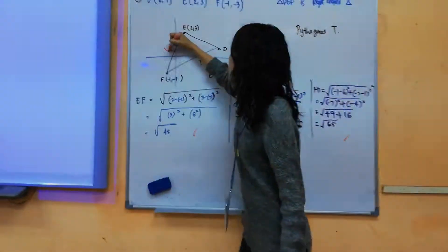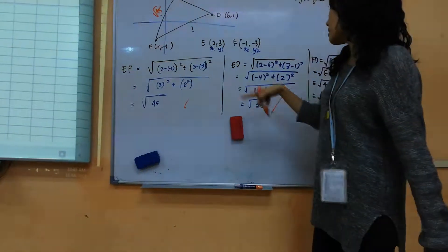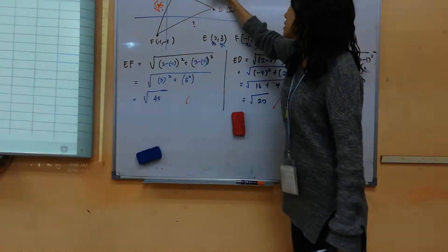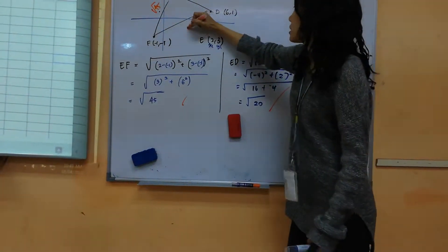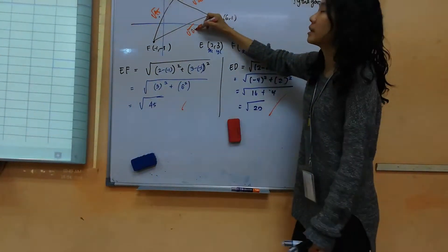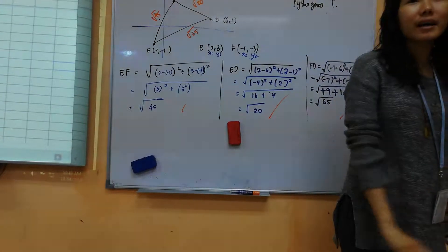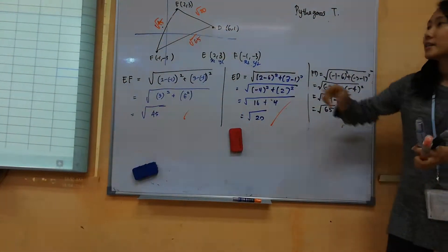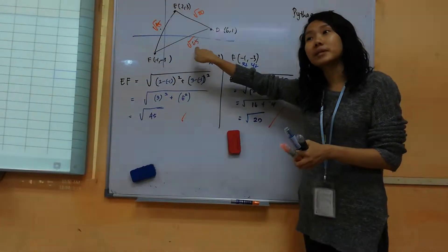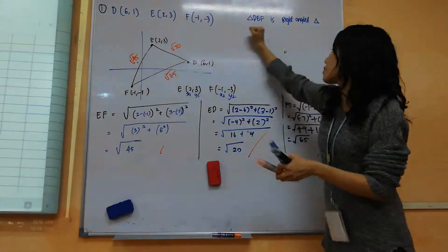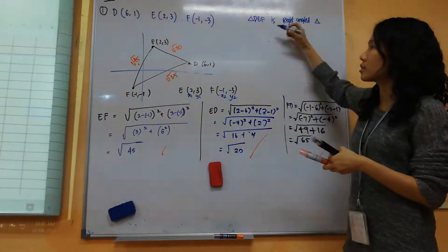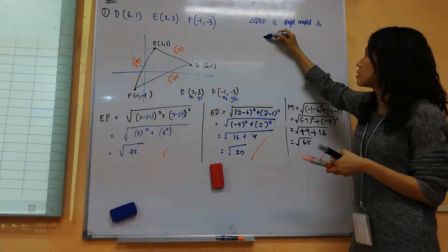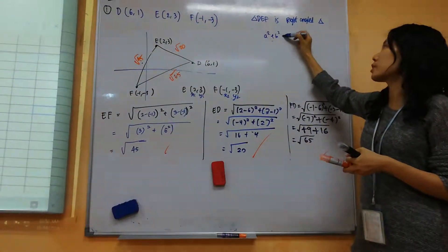FE is actually square root 45. ED is square root 20. And then FD is square root 65. Tell me which one is the longest side here, Robson. DF. Yeah, this one is the longest side. So this must be C square. So let's put inside the Pythagoras theorem. A square plus B square equals to C square, right?